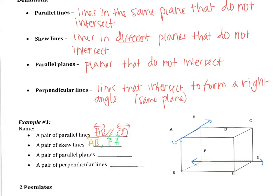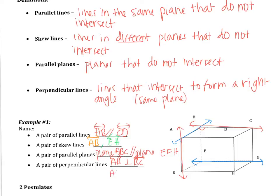Moving on to parallel planes: the top plane and the bottom plane would be parallel to each other. Remember that you always name a plane by three points, so the top of the box I'm going to call plane ABC, and that's going to be parallel to the bottom of the box, which I'll call EFH — so plane ABC is parallel to plane EFH. And then lastly, a pair of perpendicular lines. AB is going to be perpendicular to BC, and AB is also perpendicular to AE, BF, and AD — there's a whole bunch of examples. These definitions we're going to use throughout the entire chapter, so it's important that you remember these.